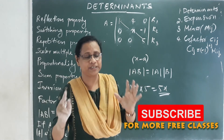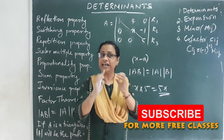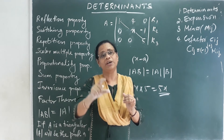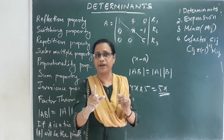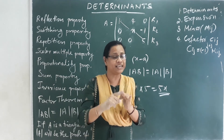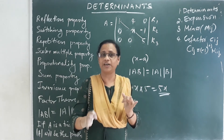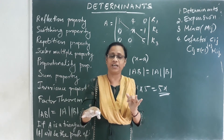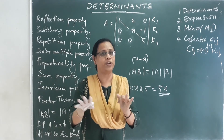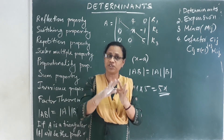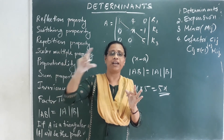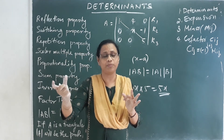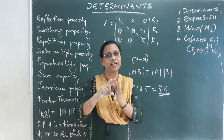In summary, there are 10 properties of determinants. First is the reflection property: rows and columns are interchangeable (transposing gives the same determinant value). Second is the repetition property: if two rows or columns are identical, the determinant value is zero. Third is the switching property: if you interchange a row or column, the sign of the determinant changes.